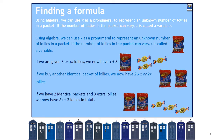We can use X as a pre-numeral or variable for the number of lollies in a packet. If the number of lollies in a packet can vary, we call it X — it's a variable. We're defining what X is going to be: it is the number of lollies in a particular packet. So using algebra, X represents the unknown number of lollies — in this case, the number of Fantails lollies inside the packet.